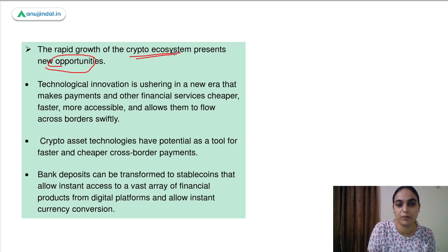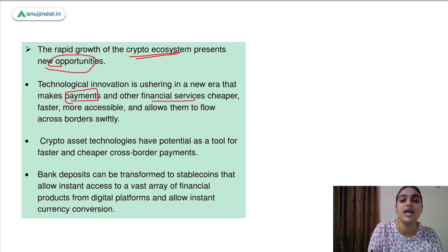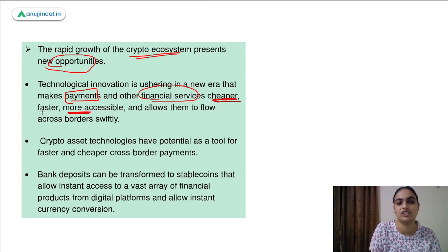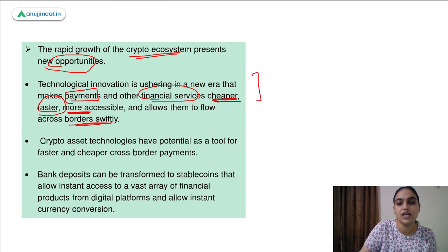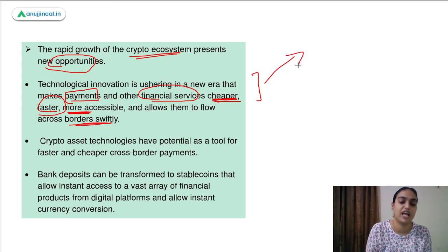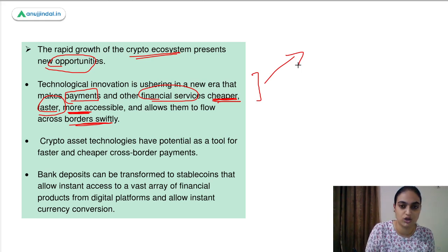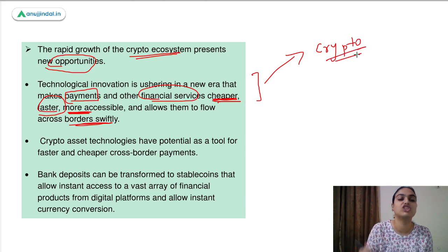According to the IMF report, the new opportunities the crypto ecosystem presents include: first, technological innovation is ushering in a new era of making payments. You can get different financial services at a cheaper cost, with more access and in a very fast manner, and you can even do dealings across borders. Earlier, if you had to make payment in international currency, you had to convert currency and incur a lot of costs, time, and effort. Now using crypto, you can easily make payments internationally in a very fast manner at a cheaper cost.